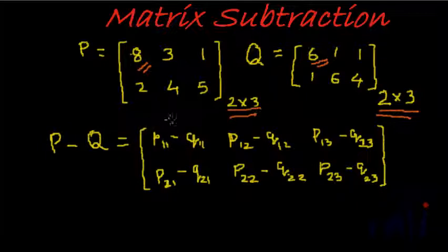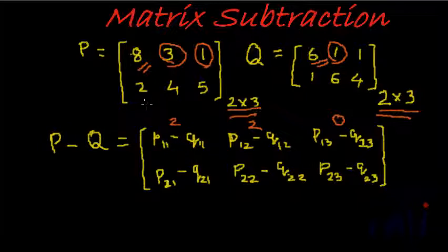It is 8 minus 6, which is 2. P 1 2 minus Q 1 2, which is 3 minus 1, which is 2. P 1 3 minus Q 1 3, which is 1 minus 1, which is 0.